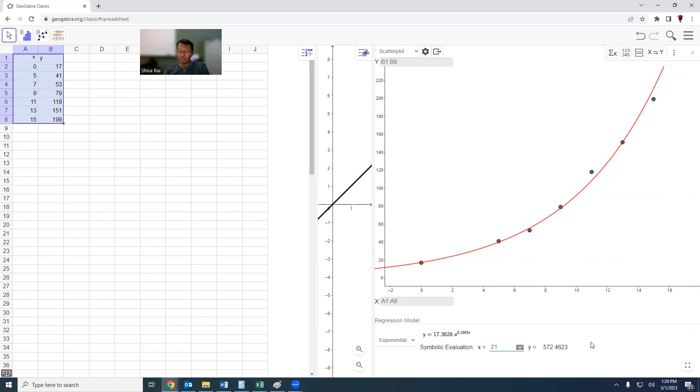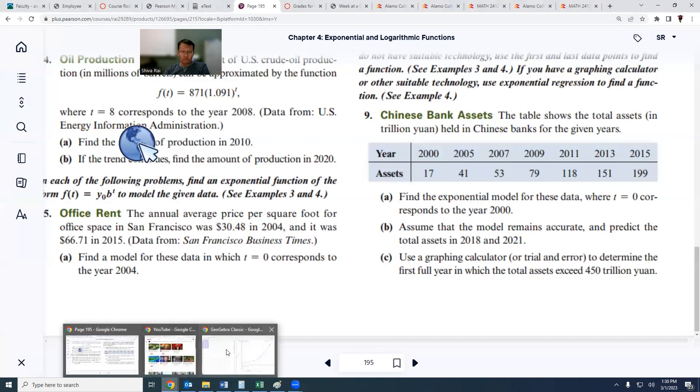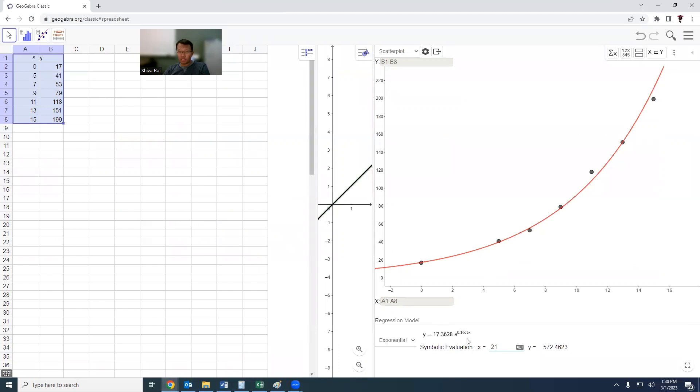Now let us go for the final question. It is saying use graphing calculator or trial and error to determine the first full year in which the total assets exceed 450 trillion yuan. We need to find when, after which the total assets will exceed 450 trillion yuan. For that we need to draw this graph in a separate website.